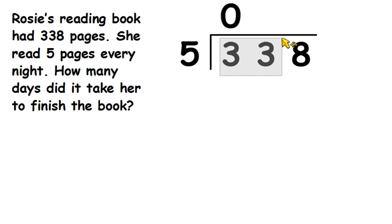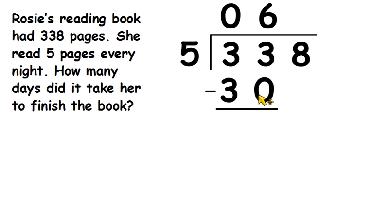Well, we can go 5, 10, 15, 20, 25, 30. 35 would be too many. So 6 times 5 is 30. And then 6 times 5, we need to bring down that 30, subtract it from the 33 to give us 3.